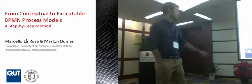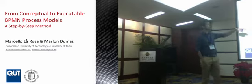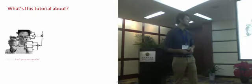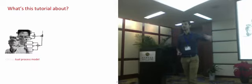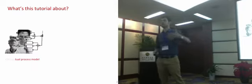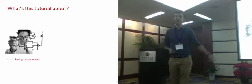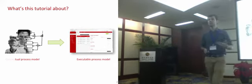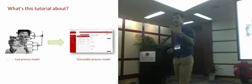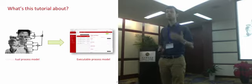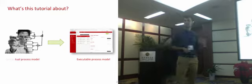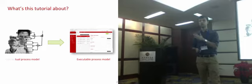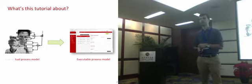Let's start. This workshop is about a method, a step-by-step method to turn conceptual process models into executable process ones. We want to take a process model that has been designed typically by business analysts for requirement analysis and communication purposes, and convert that into an executable process model. An executable process model is one that can be deployed to a business process management system and automatically enacted by such a system, which coordinates the handover of work between the various resources involved in this process.